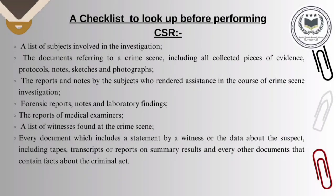Now the checklist. Here is a checklist of documents an investigator should review before performing crime scene reconstruction: first, a list of subjects involved in the investigation; second, documents regarding the crime scene and evidences like notes, photographs, and sketches; third, reports and notes of officers who performed the crime scene investigation; fourth, forensic reports, notes, and laboratory findings; fifth, reports of medical examiners; and sixth, witness statements and all documents regarding the crime, like tapes, transcripts, and reports.